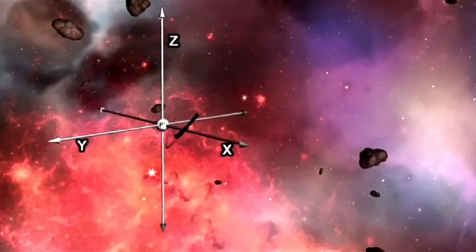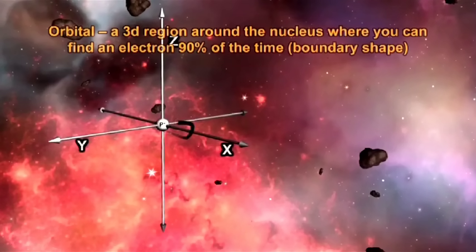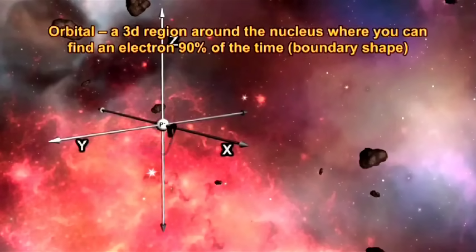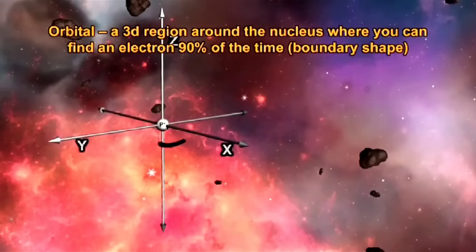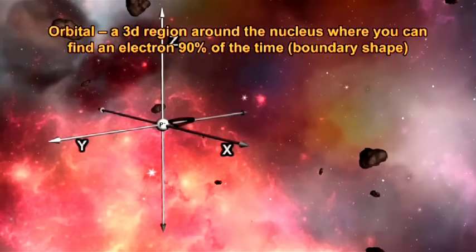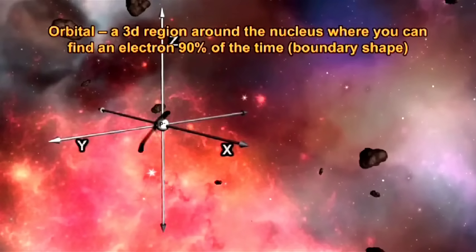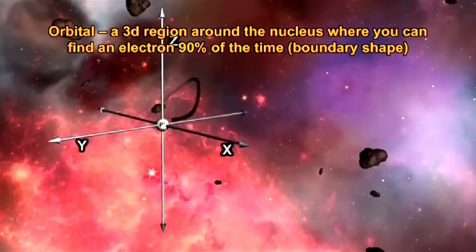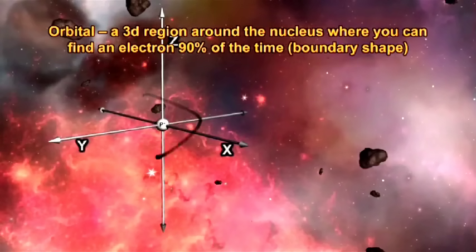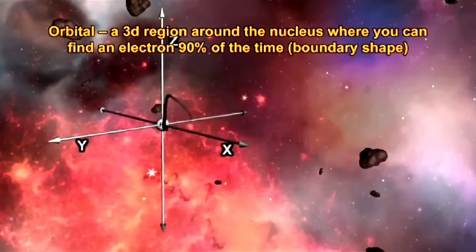In simplest terms, an orbital is a three-dimensional region or shape, and you can expect to find an electron inside this shape 90% of the time. It may help to think of this shape as a boundary surface — the electron is more likely to be inside this boundary shape rather than outside the boundary.